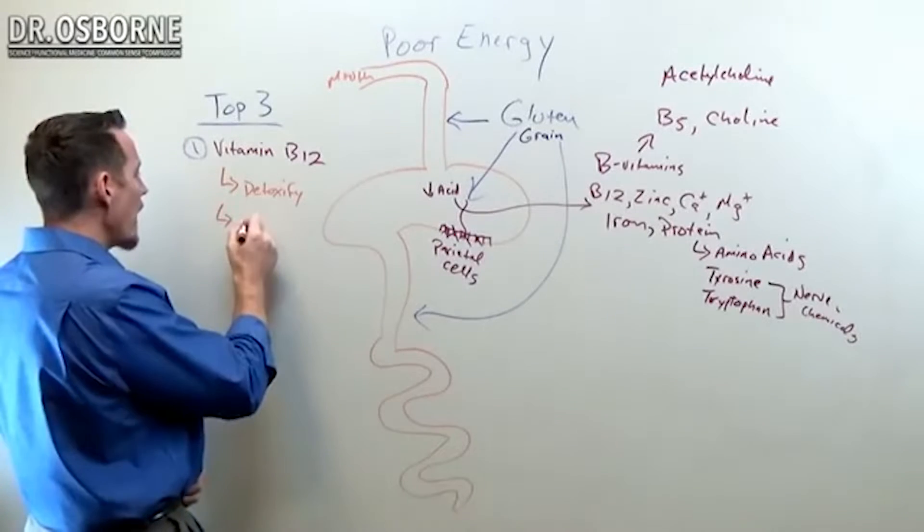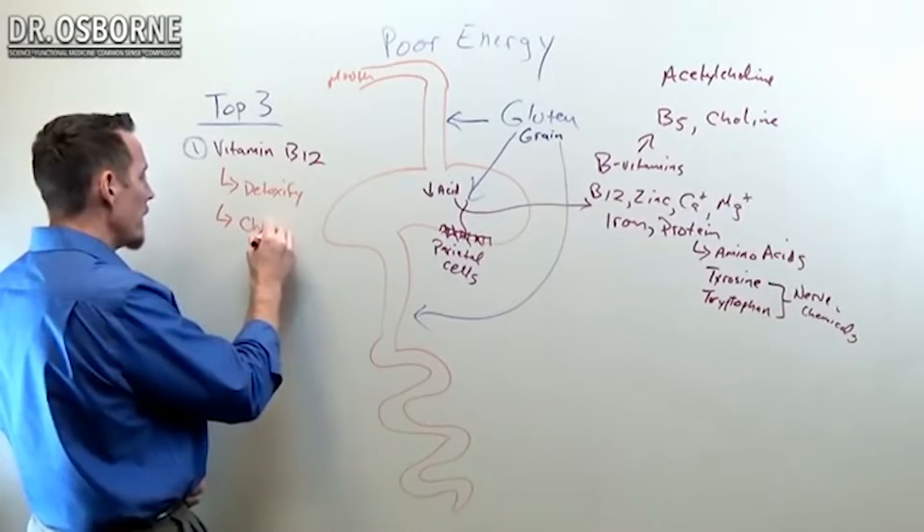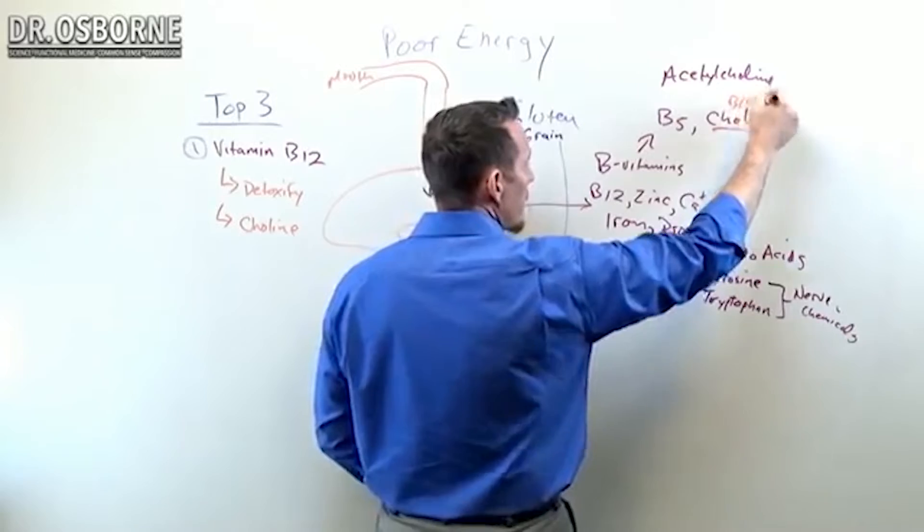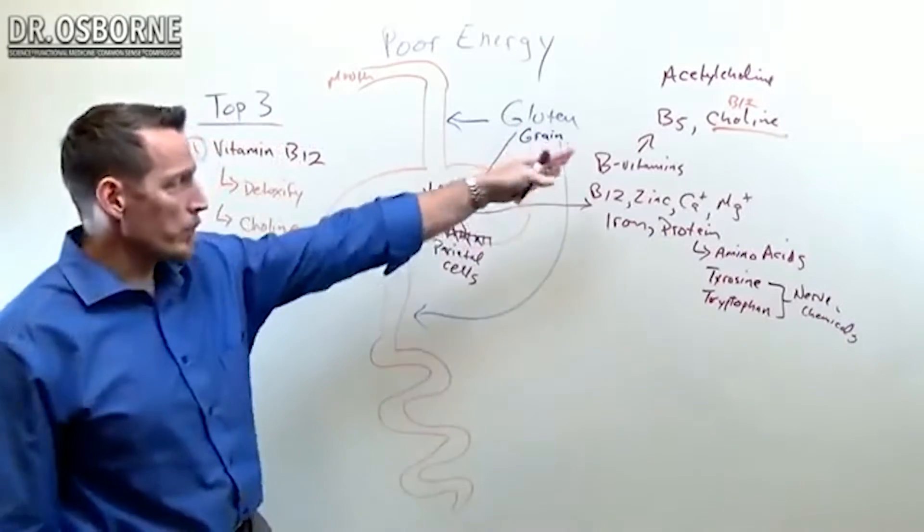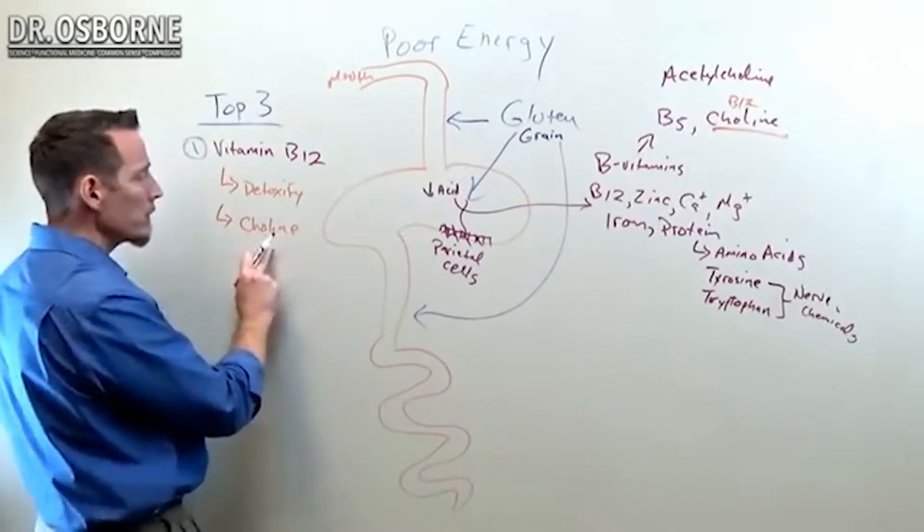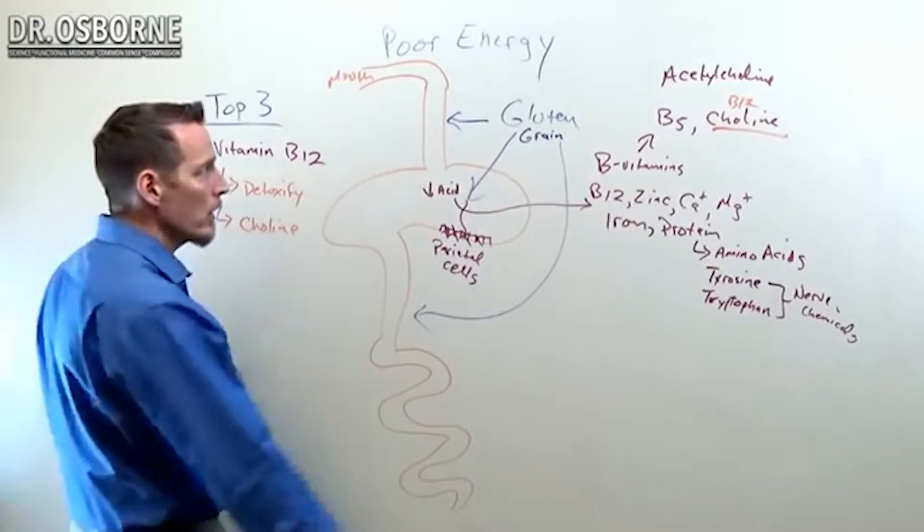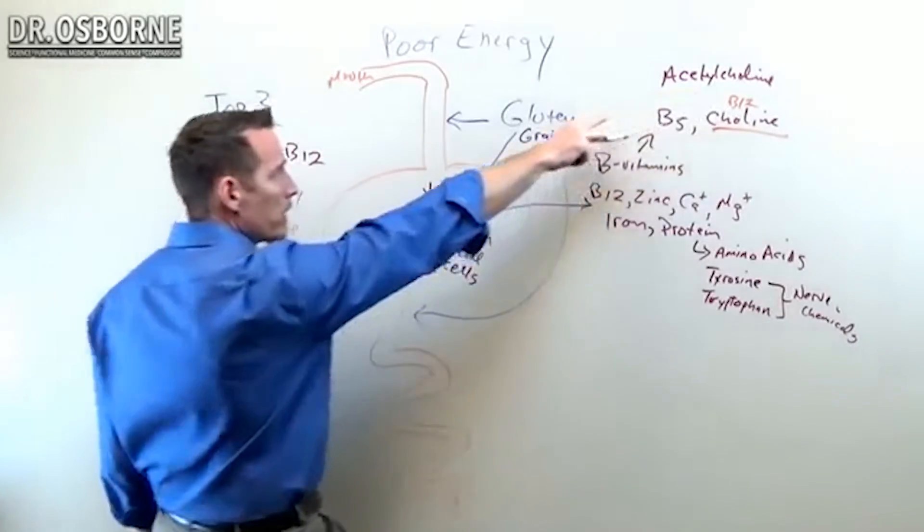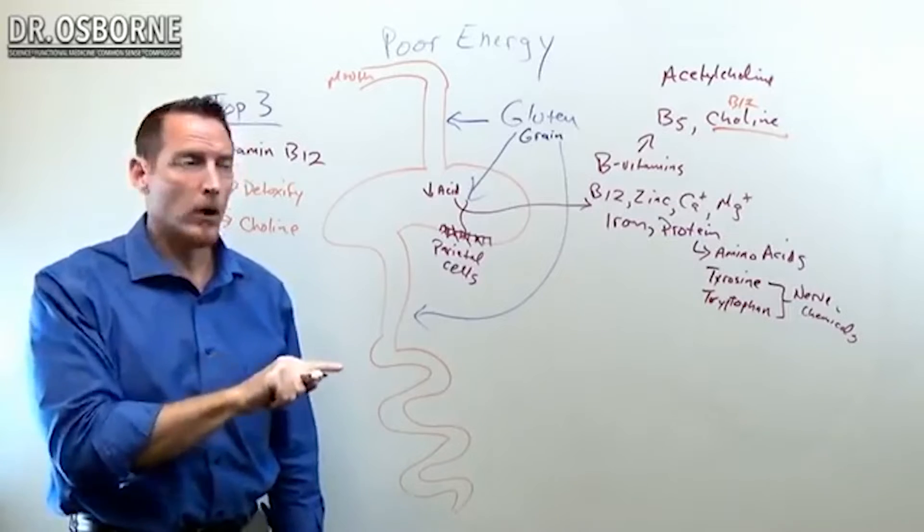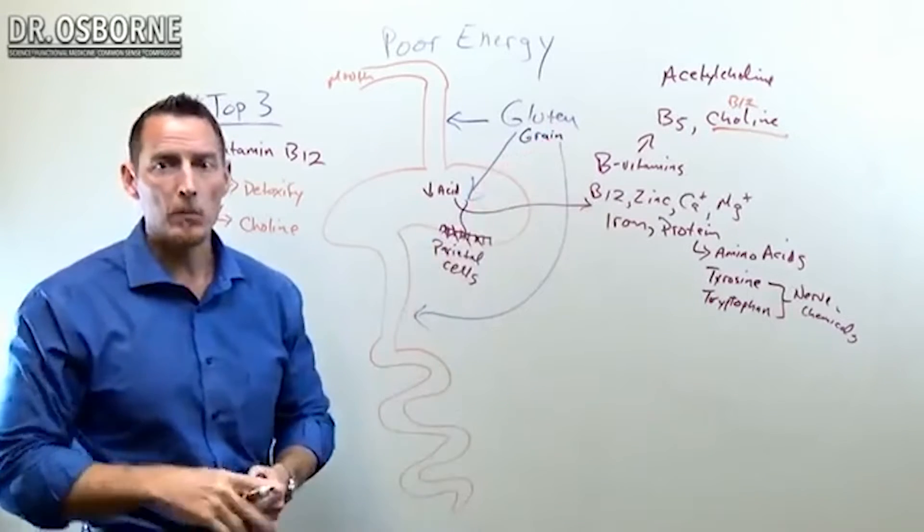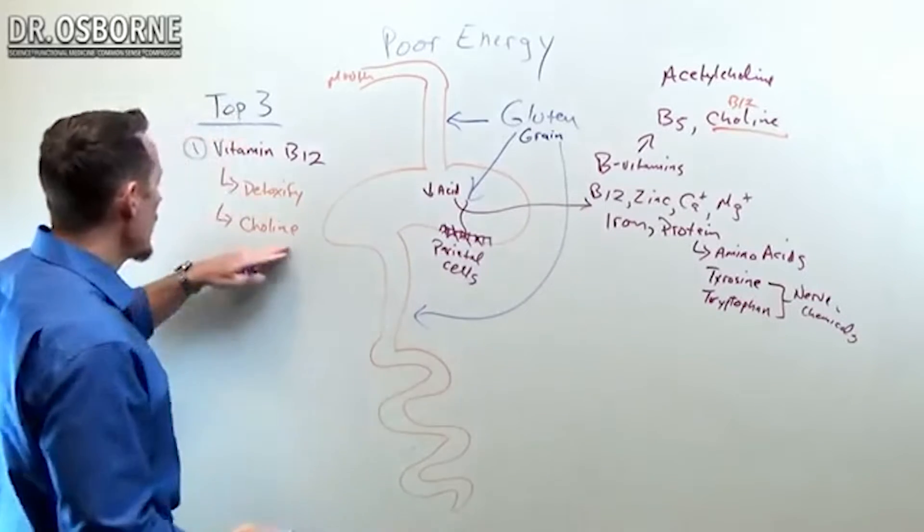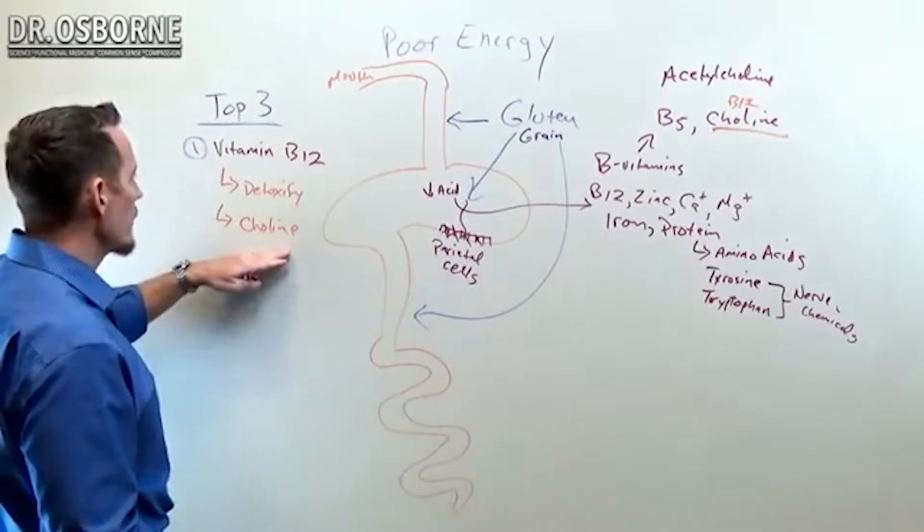Number two, you need vitamin B12 to produce choline. Now I showed you over here, choline, it's a B vitamin-like compound that you require. B12 is required to produce choline in the body. And if you don't have adequate B12, you end up choline deficient and that choline deficiency will bottom out your neurotransmitters and make you feel more emotionally drained and more mentally tired all the time. Acetylcholine deficiency is like having brain fatigue versus muscle fatigue. So choline, very critical, very important.